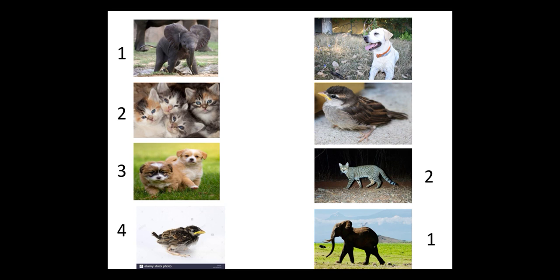Number 3 is the picture of puppies. Puppies are the young ones of a bitch. Now where is bitch? Find. Here is a bitch.